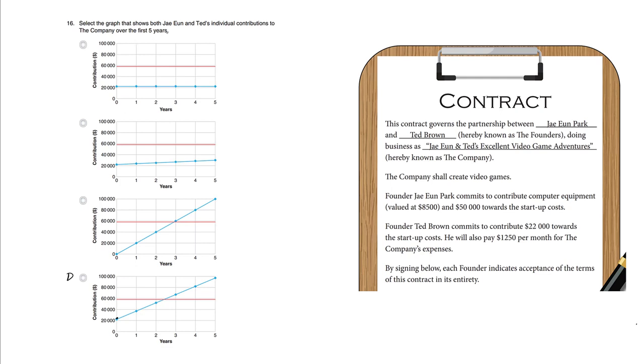Select the graph that shows both Jaehyun and Ted's individual contributions to the company over the first five years. Now the answer is D because the red line represents a fixed amount of donation just under $60,000.